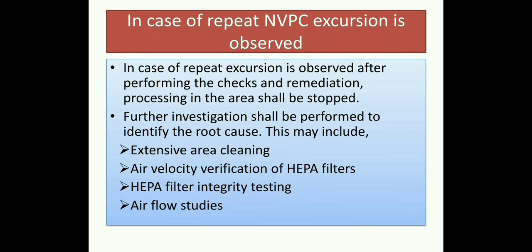Now we will see the action plan in case of repeat NVPC excursion. This is the case where initial remedial actions are not satisfactorily reducing or stopping the excursions and excursions are repeated. In case of a repeat excursion, processing in the area shall be stopped and further investigation shall be performed to identify the root cause. This may include extensive area cleaning, air velocity verification, and checking HEPA filters, as the root cause is often pertaining to the air coming into that area — including HEPA filter integrity.